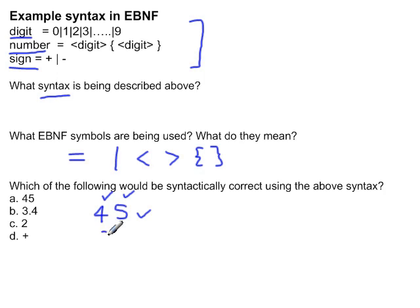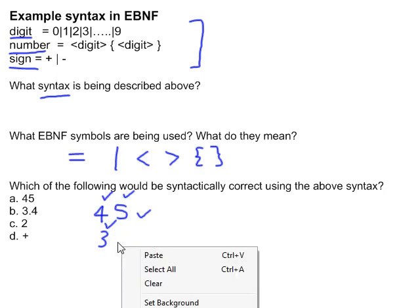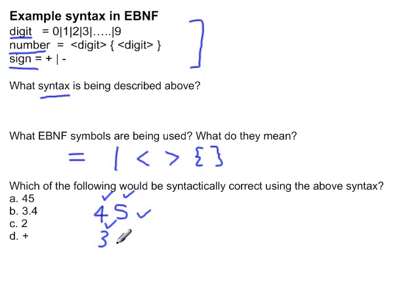Then we have 3.4. Now 3 is a digit, which is correct, and it is followed by a dot or decimal. When we look at the definition, a decimal is not defined anywhere — a number is not defined to have a decimal. Therefore that is syntactically incorrect and we will get a syntax error.